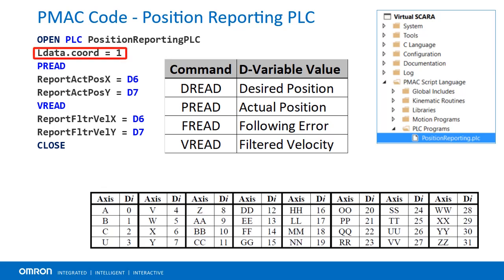To create a position reporting PLC, first address coordinate system one by setting ldata.cord equal to one. Next, use one of commands from the table depending on what is being read. Finally, use global variables to record positions from d variables set automatically by these commands. The correct d variable for each axis is listed in the table at the bottom of the slide. It may be desirable to automatically enable the position reporting PLC after homing or on startup.